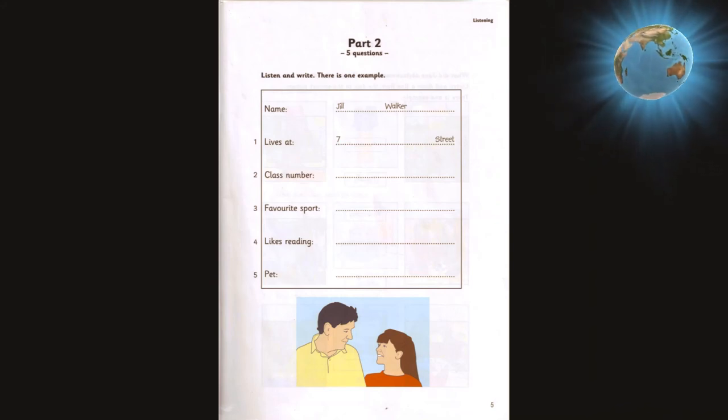Now listen to part two again. Where do you live, Jill? I live at 7 Main Street. Can you spell that, please? Yes, M, A, I, N.